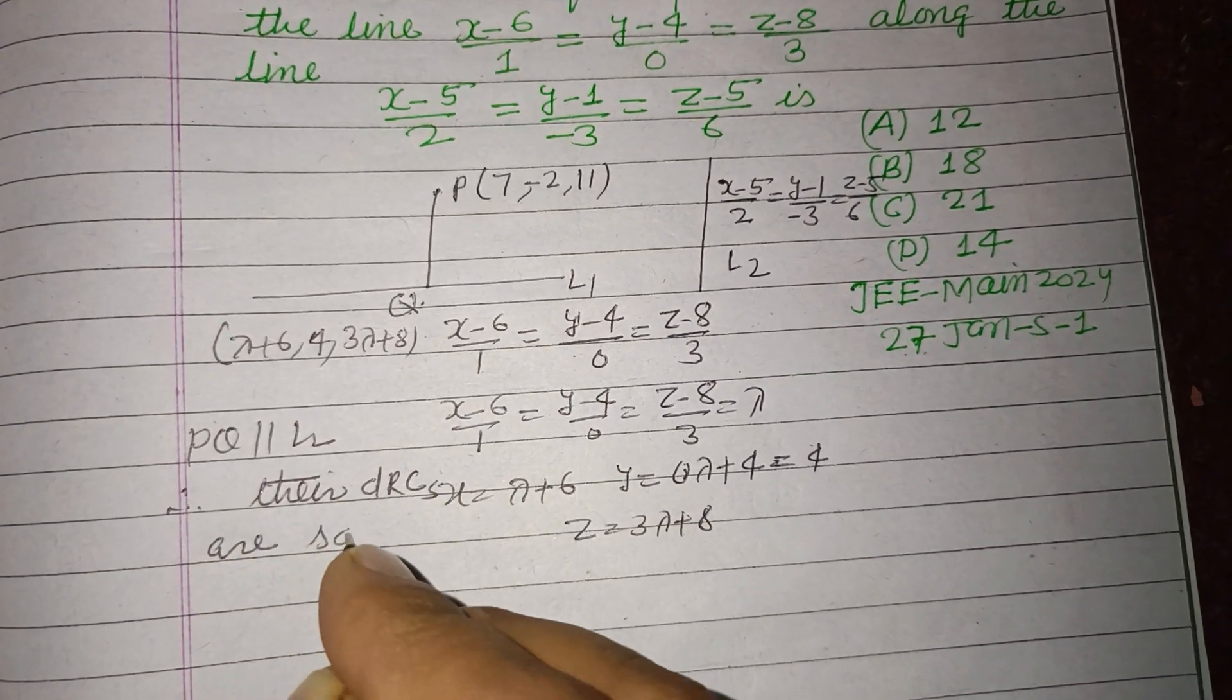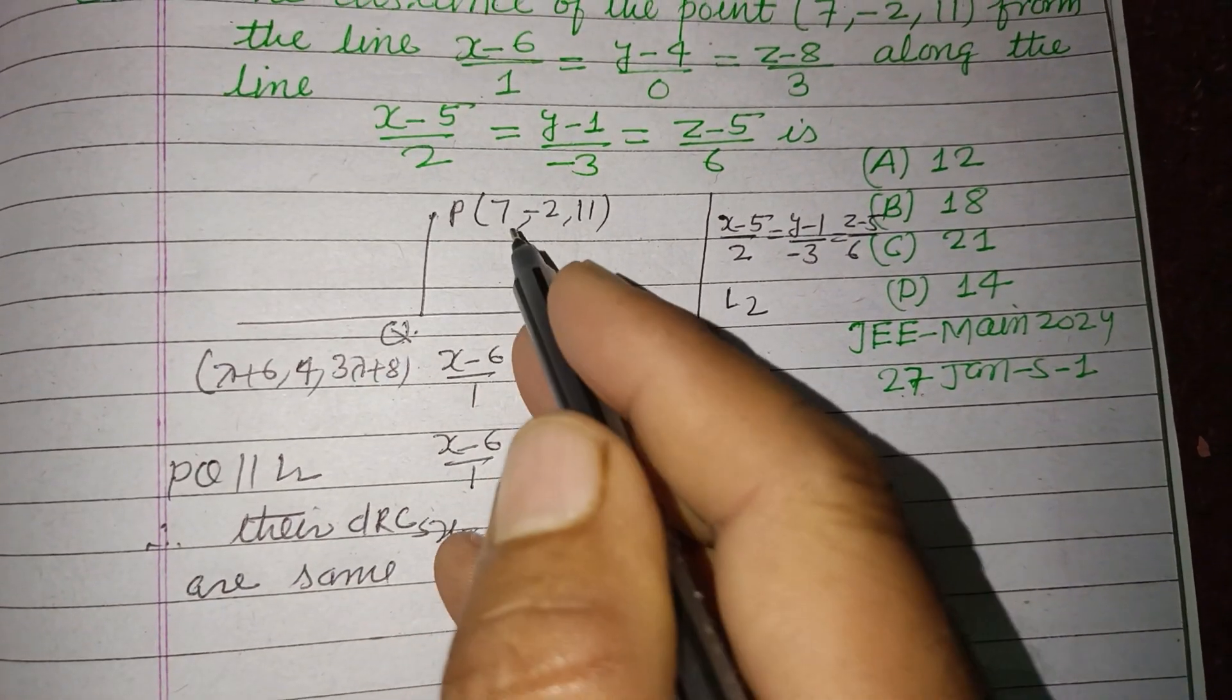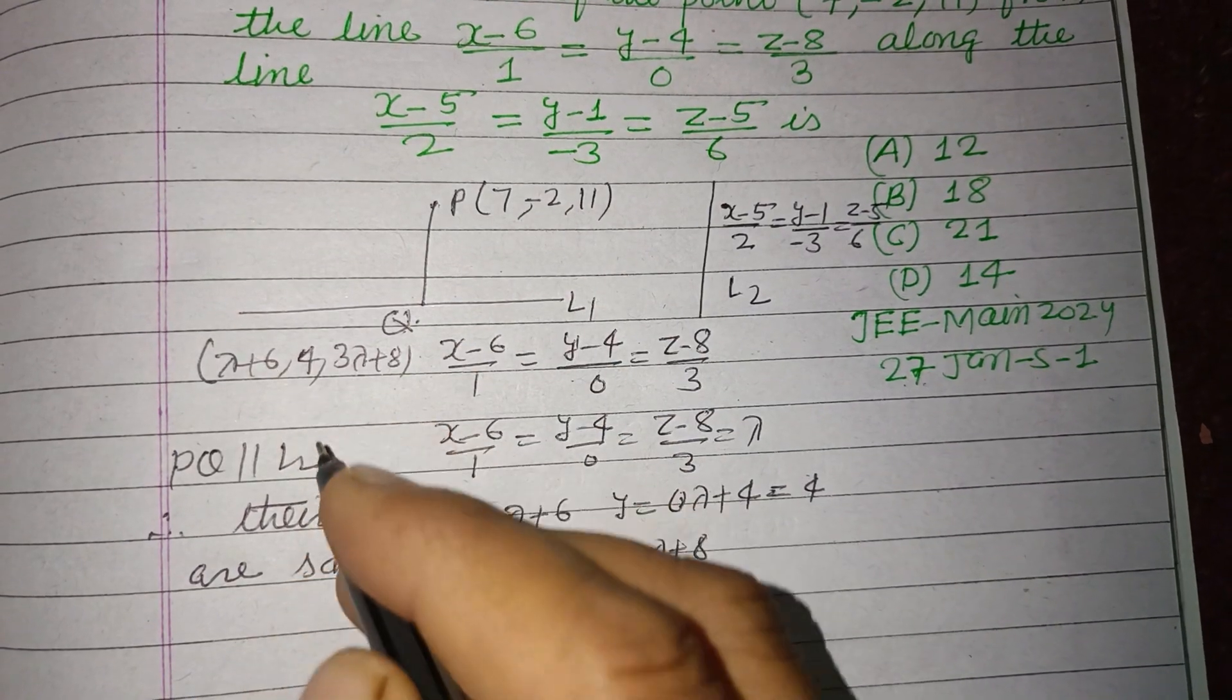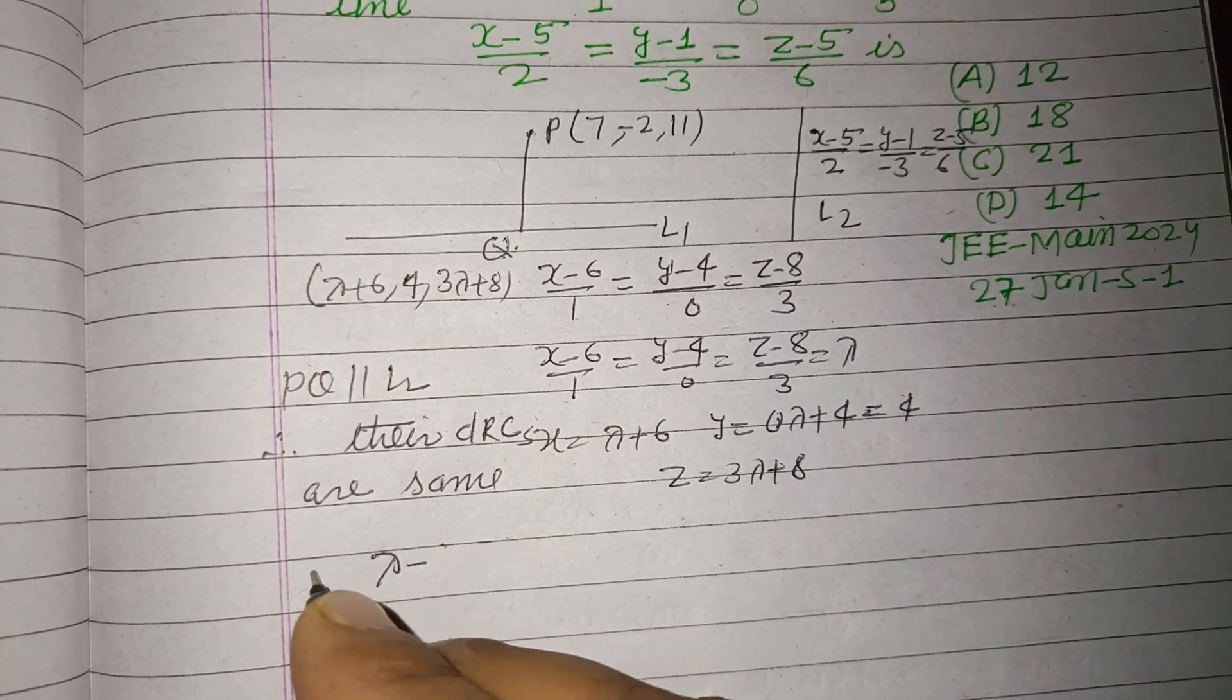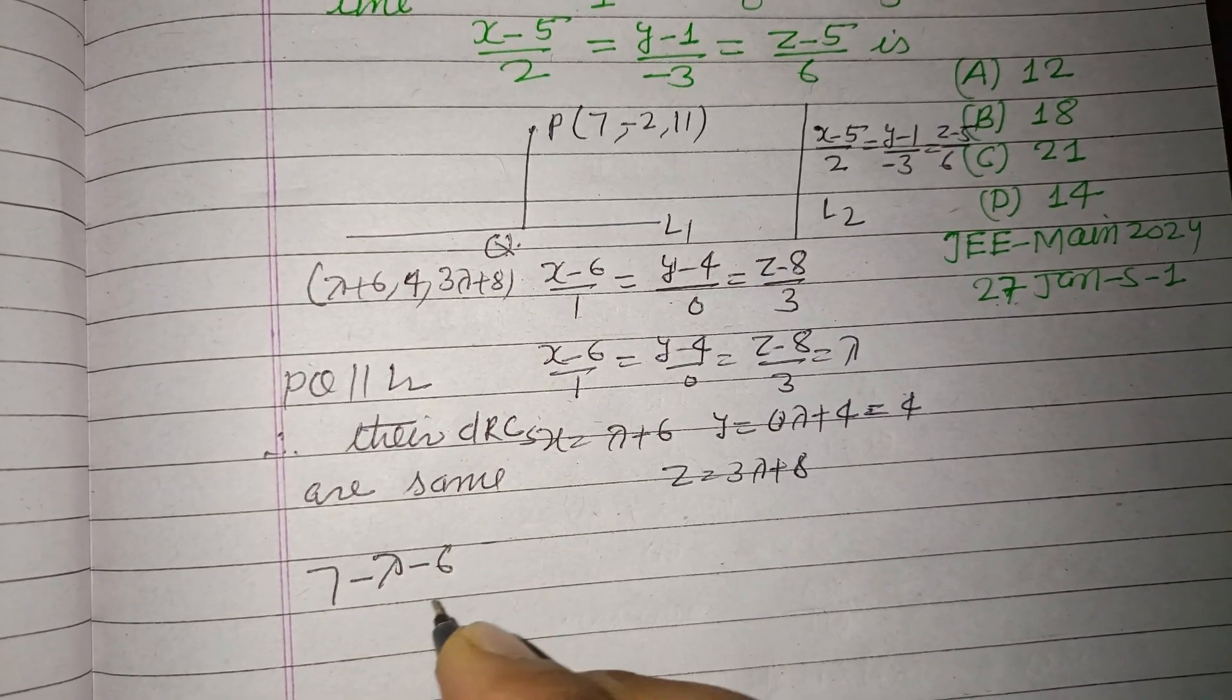as (7-(λ+6))/2 and this is (-2-4)/(-3) and